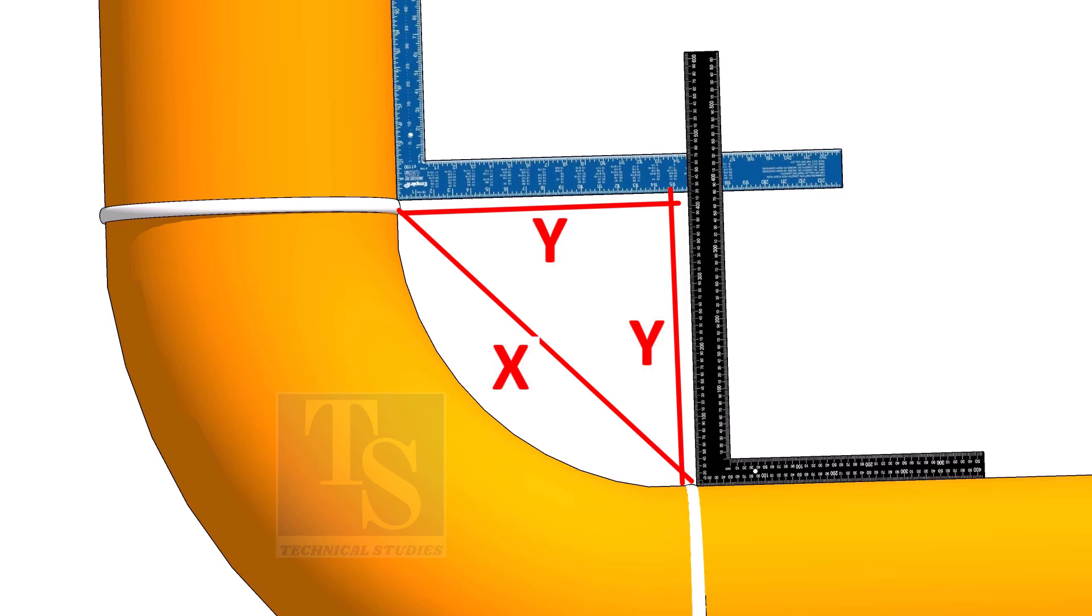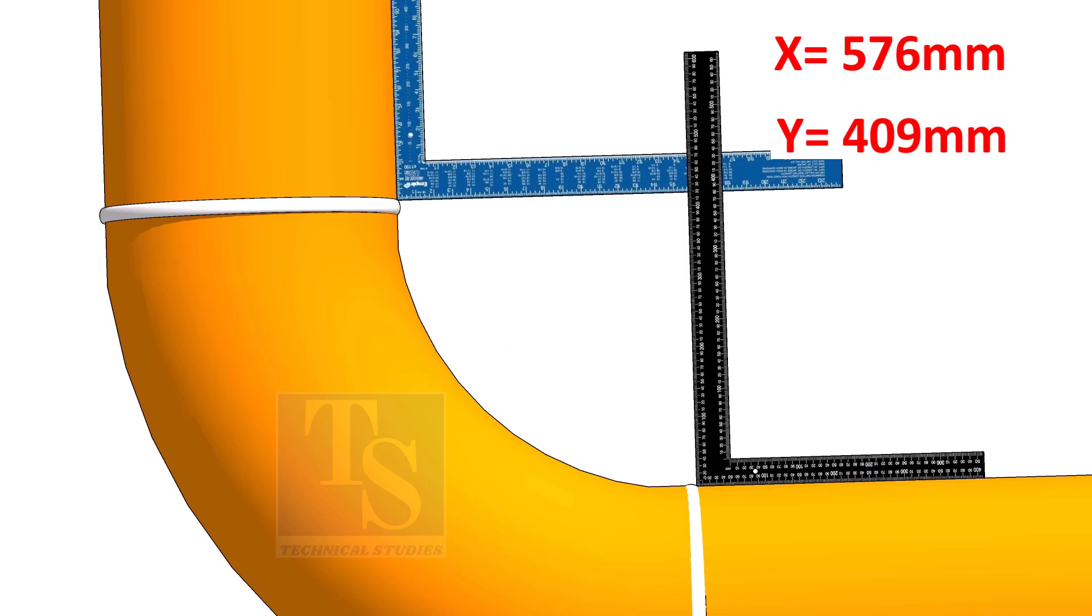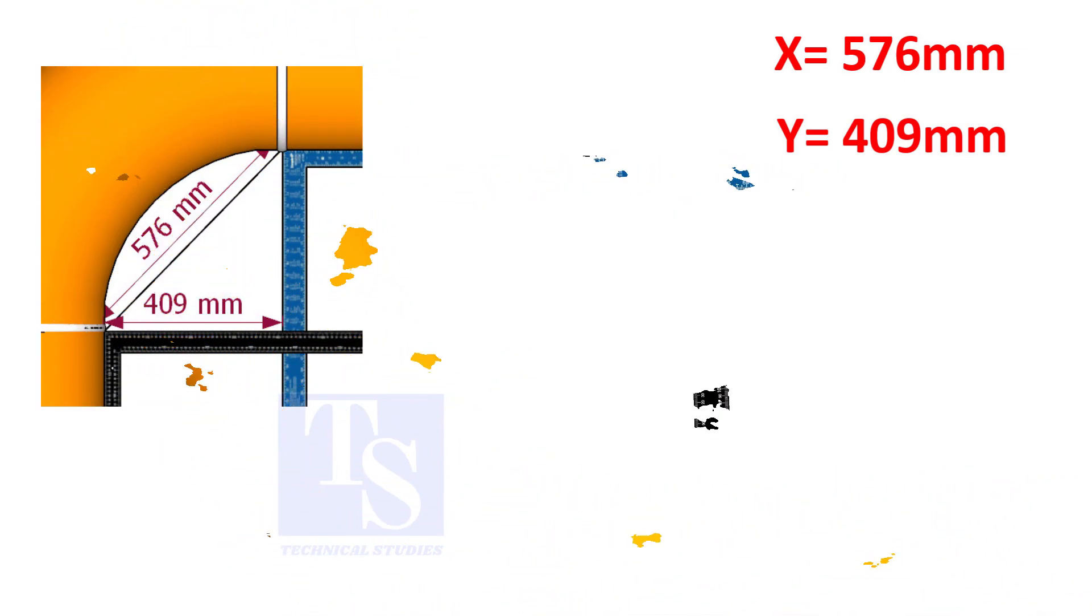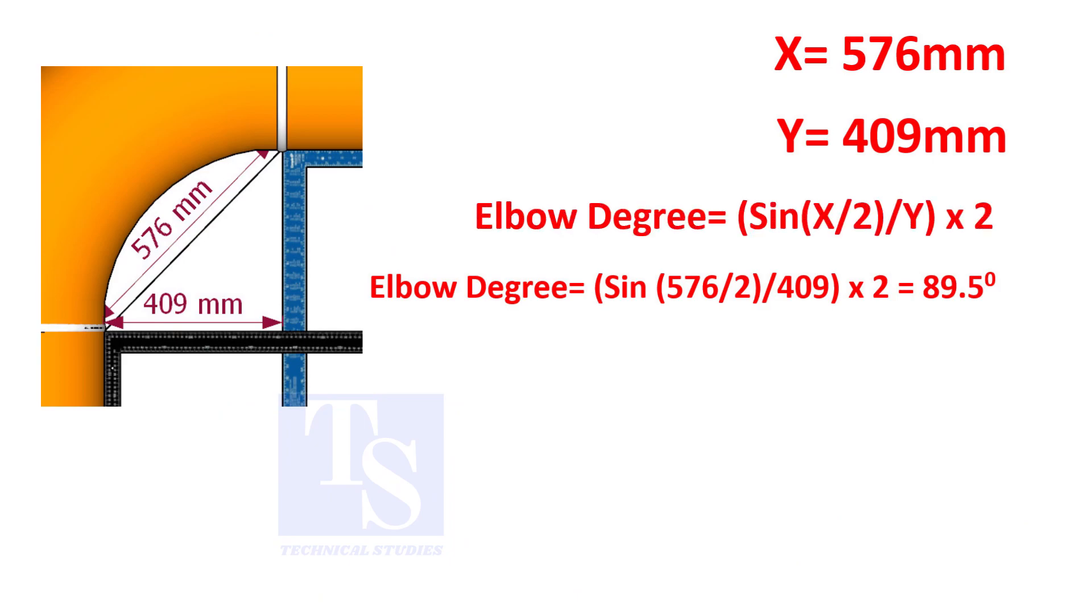Assume that the value of X is 576 and the value of Y is 409 millimeters. Apply the formula. The answer is 89.5 degrees.